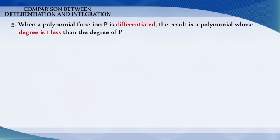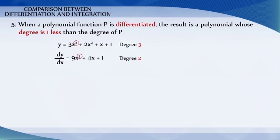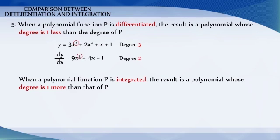When a polynomial function p is differentiated, the result is a polynomial whose degree is 1 less than the degree of p. When a polynomial function p is integrated, the result is a polynomial whose degree is 1 more than that of p.